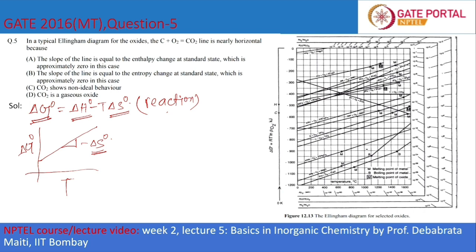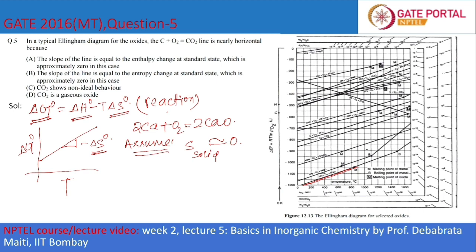Now we will consider the reaction: 2Ca + O₂ → 2CaO. We will assume the entropy of a solid is approximately equal to zero compared to that of a gas, because solids have a very compact structure while gases have a very open structure. So the entropy of gases is very high compared to that of solids.